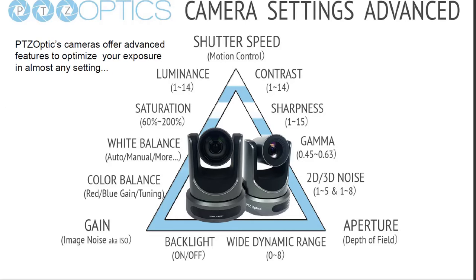Wide dynamic range allows the camera to compensate for two different lighting scenarios at the same time. If you have backlighting problems, the camera will look for a foreground and a background and compensate for both — you have 0 to 8 selections. You can also turn backlight on and off in low light situations. Going from top to bottom on the left side, luminance adds additional light to the image.